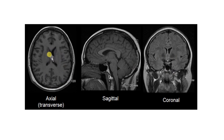In the axial view, it's like you are looking from the top of the patient. The axial view divides the body into top and bottom. The sagittal view is like you are looking at the side of the patient, since it divides the body into right and left. And the coronal view divides the body front and back, so it's like you are looking at the front or behind the patient.